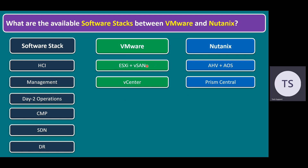vCenter also provides plenty of features like vMotion, HCI, DRS, fault tolerance, and so on. Similarly, Nutanix also has a management tool called Prism Central. Prism Central allows you to manage multiple hypervisor hosts and also clusters. In VMware we call it a cluster, but in Nutanix we call it a Prism Element.